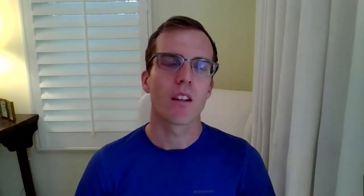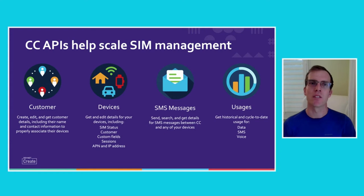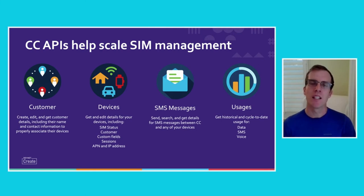Let's take a look at our core APIs and what those do. First, our Customer API allows you to create, edit, and get customer details, including their name and contact information, to properly associate those with the appropriate devices. Second, our Devices API lets you get and edit details for your devices, including things like the SIM ID, the SIM status, sessions, custom fields, and the IP address. Our SMS Messages API lets you send, search, and get details for SMS messages between Control Center and any of your devices. And last, our Usages API lets you get historical as well as cycle-to-date usage for your data, SMS, and voice.